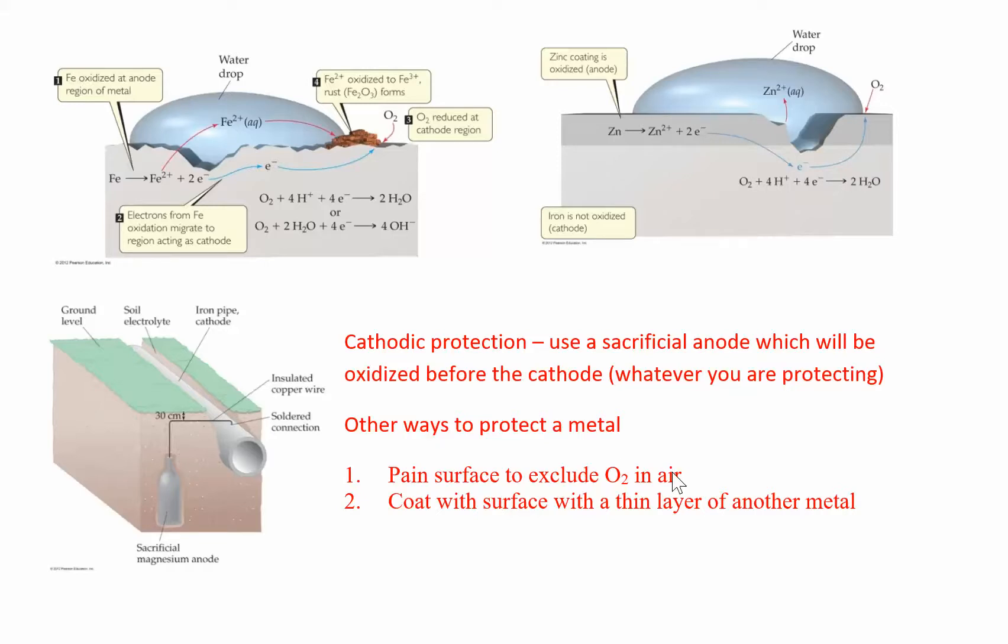You could also coat the surface with a thin layer of any other metal. Same idea - then that metal will start to break down before it hits the metal that you're trying to protect. That's really called cathodic protection. You use a sacrificial anode - sounds very apocalyptic.